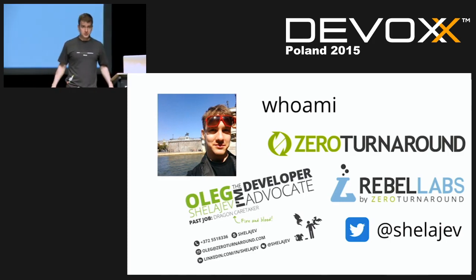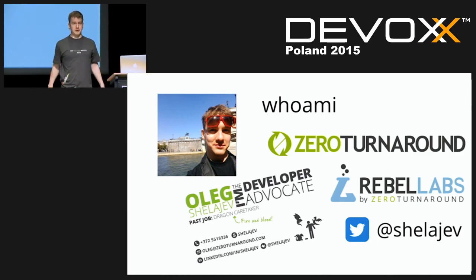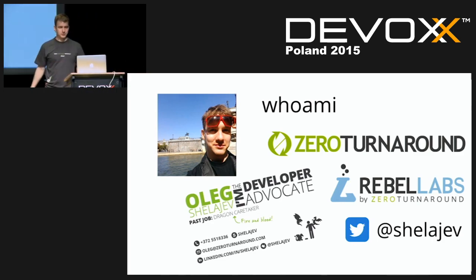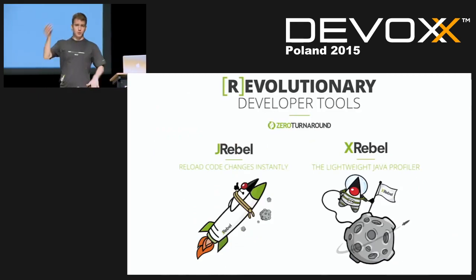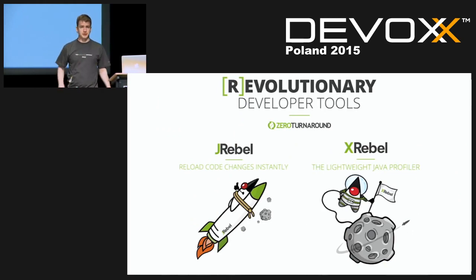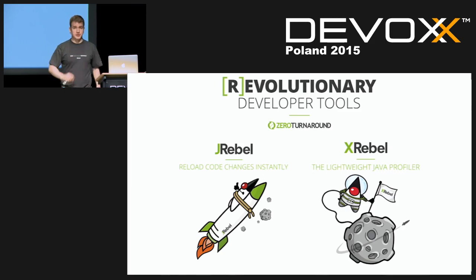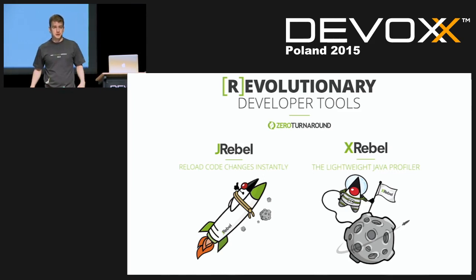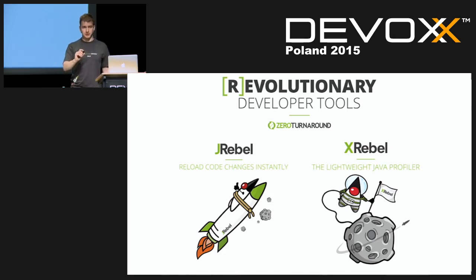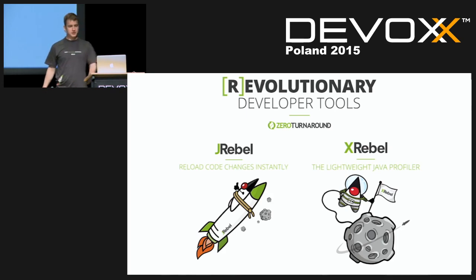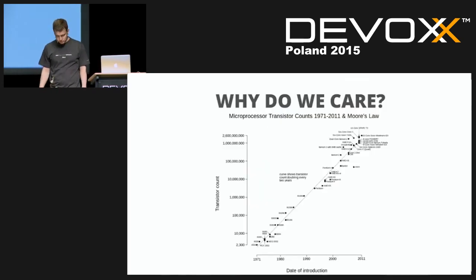There are no stupid questions, so fire away if you have any confusion. ZeroTurnaround is the home of revolutionary tools for developers. We have two products: JRebel, which allows you to reload your code changes immediately without redeploying, and XRebel, which is a lightweight profiler for Java applications. Check them out — that will make me and my employer happy. Now let's go back to concurrency.